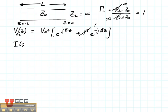The current as a function of Z is V0+ divided by Z0 times e^(jβz) minus the reflection coefficient times e^(-jβz). Again, the reflection coefficient is 1 for an open circuit.